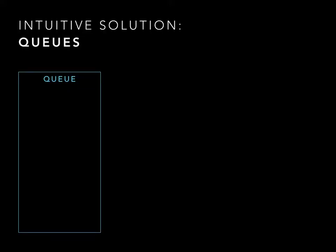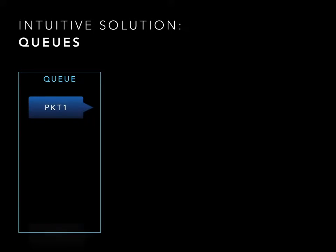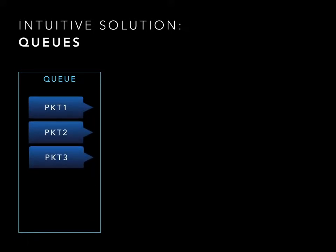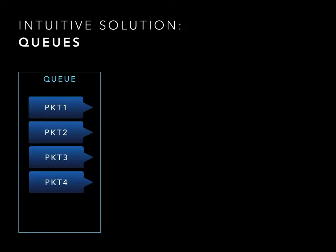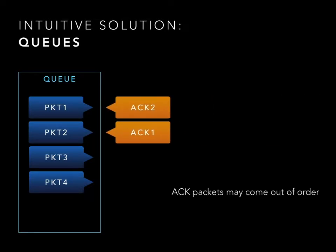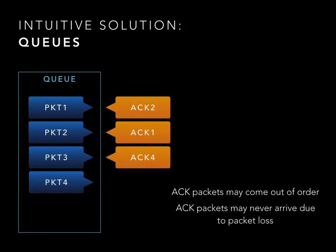Moving on to implementation. Here we show the intuitive but incorrect solution built on queues. The identifier and timestamps of the outgoing packets are stored in a queue as they arrive at the switch. When the acknowledgement arrives, the original packet is removed from the queue and the RTT is calculated as the difference of the timestamps. But this solution fails since queues depend on the acknowledgements arriving in the same order, which is rarely the case in real network deployments.